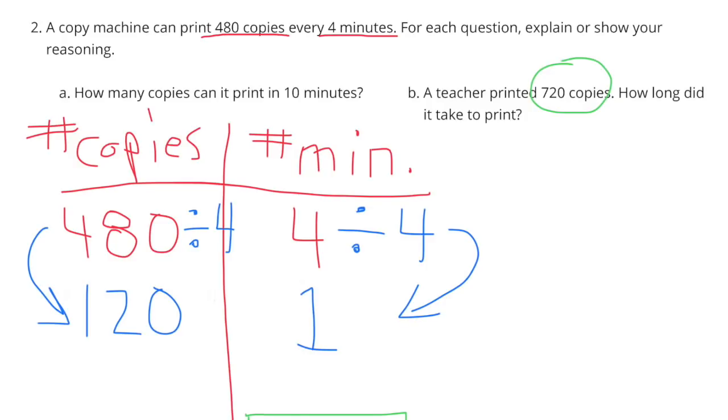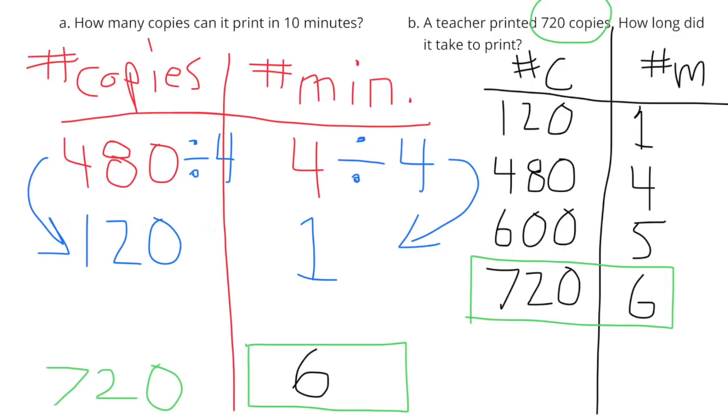B. A teacher printed 720 copies. How long did it take to print? Now we just found out that the copy machine can make 120 copies in 1 minute. So let's create a table and we'll start with 1 minute 120 copies. 6 times 120 would give me 720. So in 6 minutes, the teacher could have printed 720 copies.